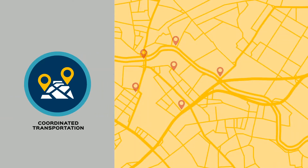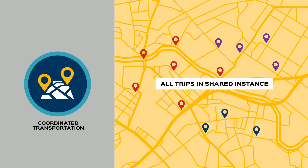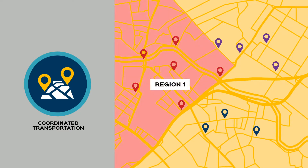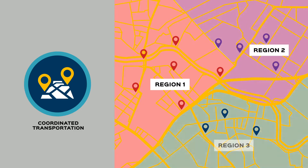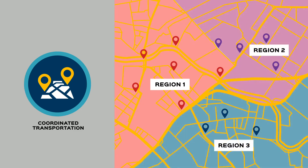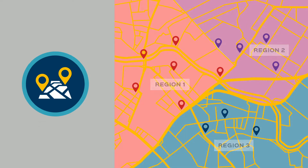Coordinated transportation. Multiple organizations can coordinate a cost-effective regional system by sharing a single instance of Novus. Each agency sees only their assigned trips upon login, and reports can be generated at an agency level.